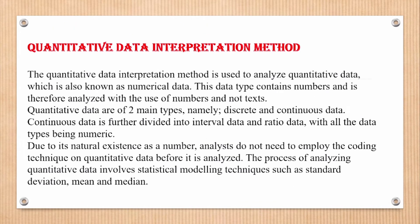The quantitative data interpretation method is used to analyze quantitative data, also known as numerical data. This data type contains numbers and is therefore analyzed with the use of numbers and no text. Quantitative data is of two main types: discrete and continuous data. Continuous data is further divided into interval data and ratio data, with all data types being numeric. Due to its natural existence as a number, analysts do not need to employ the coding technique. The process of analyzing quantitative data involves statistical modeling techniques such as standard deviation, mean, and median.